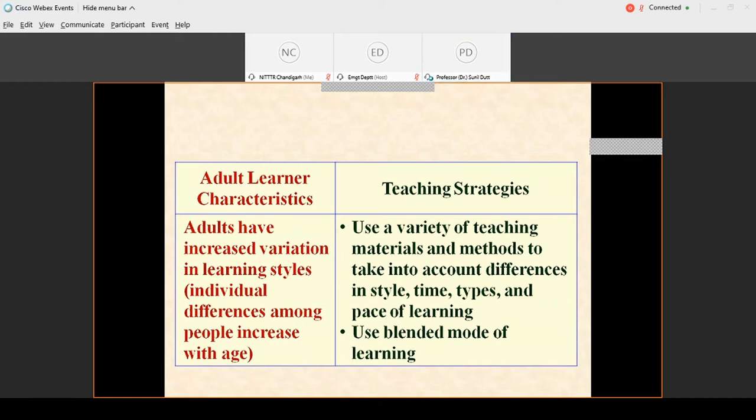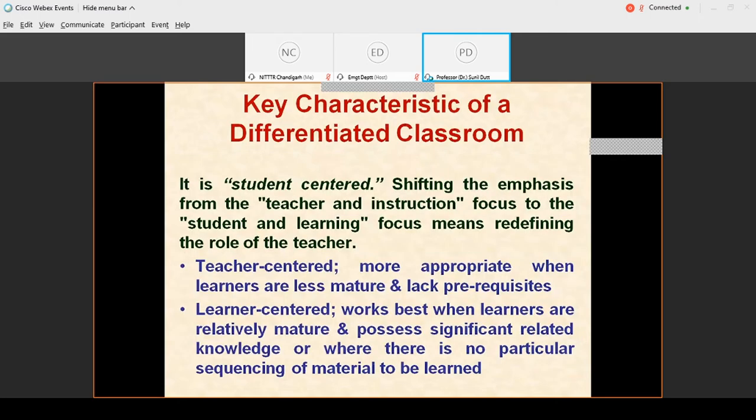Adults often have a problem-centered approach to learning. Show immediately how new knowledge can be applied to current problems. Relate the context and examples from life. Use participatory techniques like case studies, problem-solving groups and flipped classroom. Adults tend to be more interested in straightforward how-to. Focus on theories and concepts and orient the course content toward direct application. Adults have increased variation in learning style. Use a variety of teaching material and methods. Use blended mode of learning to vary your teaching strategy. The key characteristic of a differentiated classroom is that it is student-centered, shifting the emphasis from the teacher and instruction to student and learning.